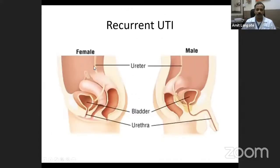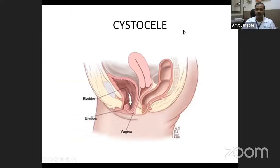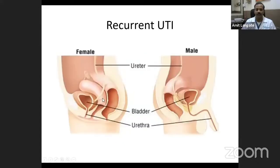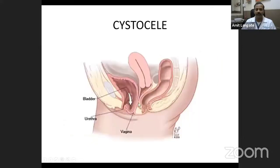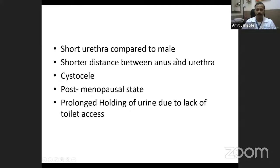Anatomically, the female urethra is short compared to the male urethra, and the close proximity of the urethral opening to the anal opening causes higher risk of infection. In conditions like cystocele, the bladder sags down causing residual urine retention, predisposing to bacterial growth and recurrent infection. Other predisposing factors include postmenopausal vaginal atrophy and prolonged holding of urine due to limited toilet access.